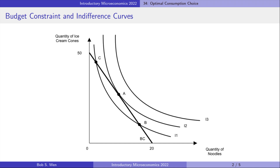Let's compare three points: A, B, and C. They are on the same budget line, so they are all affordable. Points B and C are on the indifference curve I1. But point A is on a higher indifference curve, I2, meaning that the consumer obtains a higher level of utility or satisfaction than at points B and C. Although all three points are affordable, point A is the most preferred combination of noodles and ice cream cones.